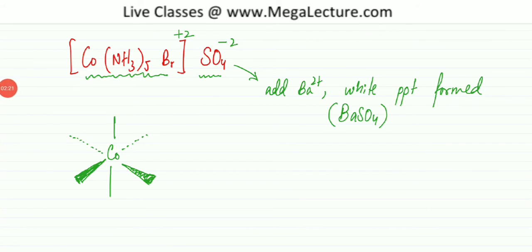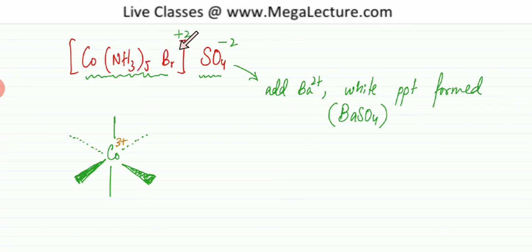I'll also explain what the complex ion is. Cobalt has a charge of 3+ here because NH3 has no charge and Br is minus 1, giving a net charge of plus 2, which means cobalt must be plus 3. There are five NH3s datively bonded to it, bringing their lone pairs attracted to the positive cobalt ion.